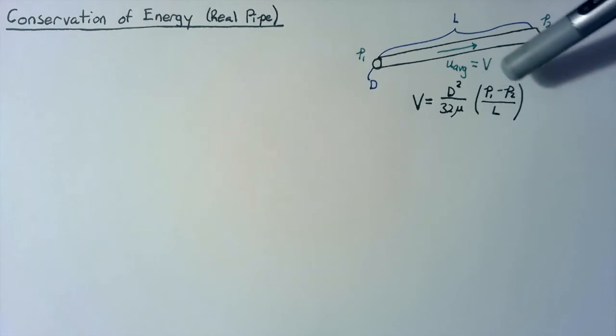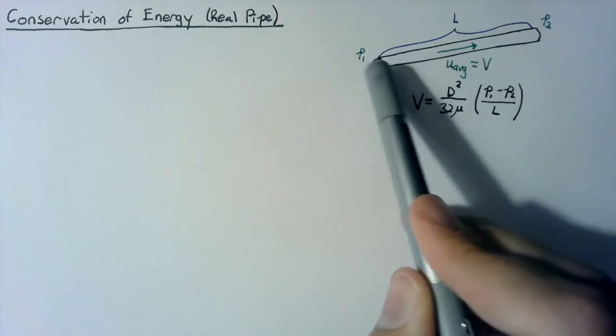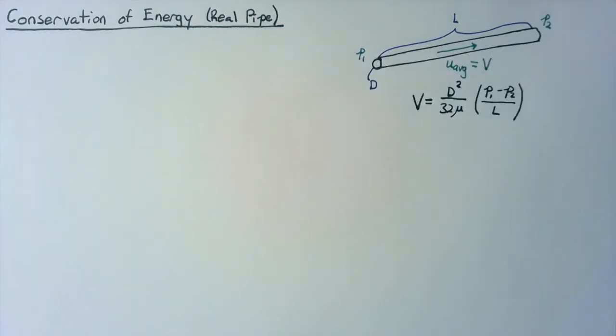Remember that P is decreasing from state one to state two, because the pressure has to be higher at the beginning to push the flow along.